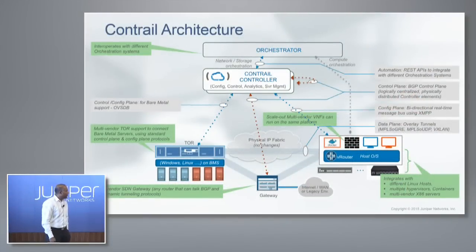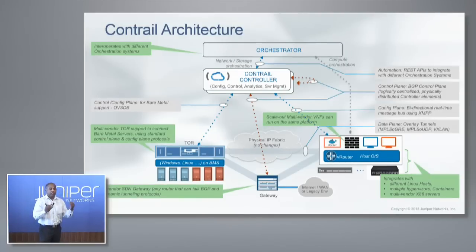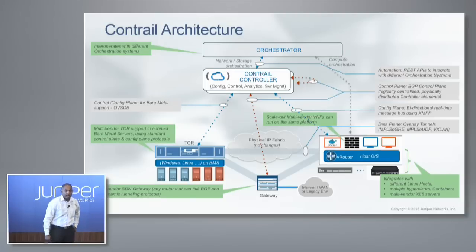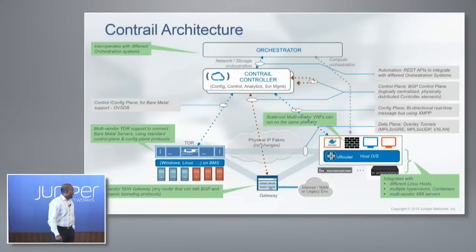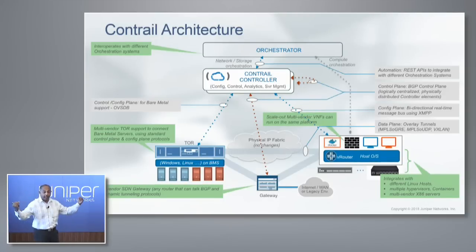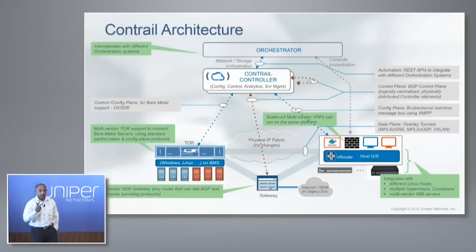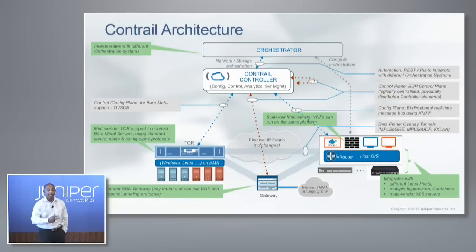Here is a high-level architecture of Contrail. There is a logically centralized controller, which is actually physically distributed and consists of multiple nodes — control nodes, config nodes, and analytics nodes. The control nodes talk east-west using BGP, which is how they federate among themselves and how you get control plane scalability. There is a data plane component called VRouter, which is a kernel-loadable module that sits within each host.